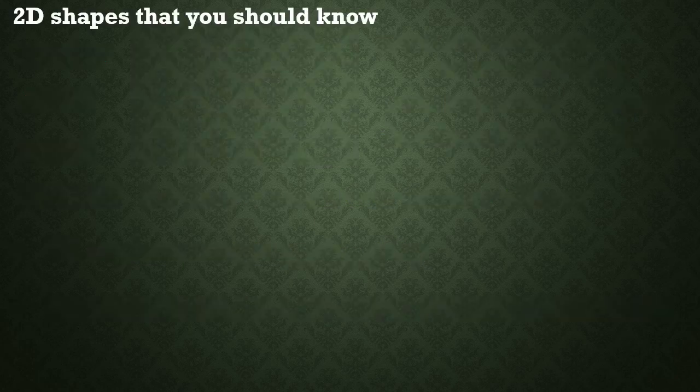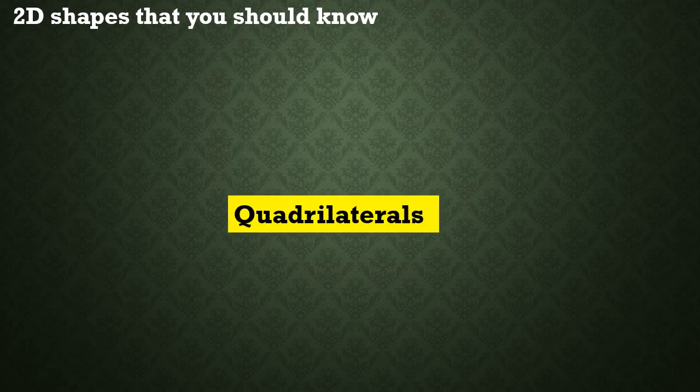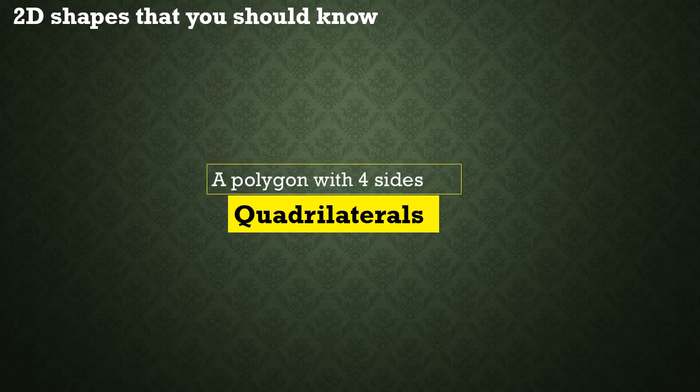Let's discuss the 2D shapes that you should know. First is the quadrilateral. A quadrilateral is a polygon with four sides.